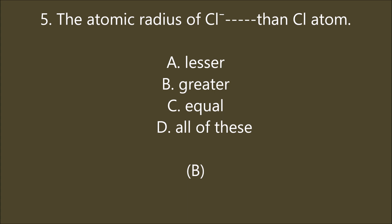The atomic radius of Cl minus ion is ___ than Cl atom: lesser, greater, equal, or all of these. B is the right answer — greater. Cl atom contains 17 electrons, whereas Cl minus ion contains 18 electrons. Therefore, the nuclear attraction is less in Cl minus ion compared with chlorine atom. Therefore, the size of the Cl minus ion is greater than the chlorine atom. In general, negative anions of an element have bigger size than the neutral atom.